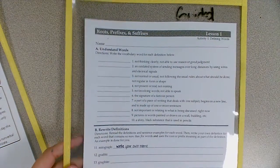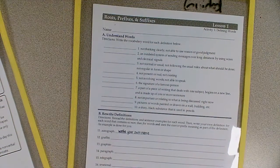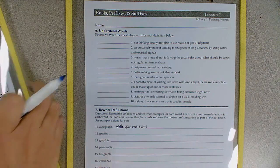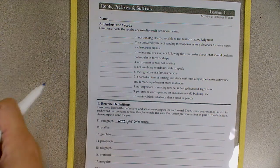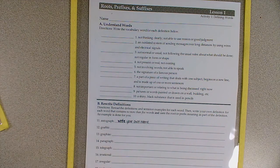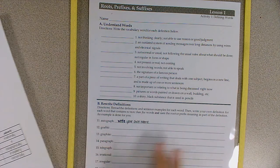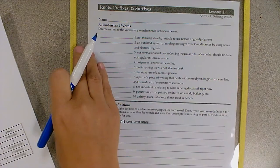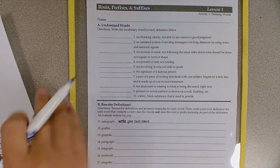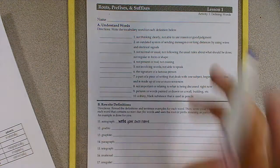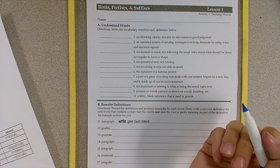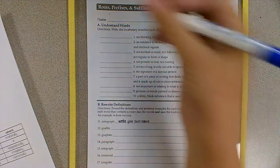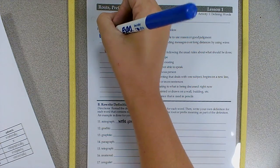So let's take a look at our guided practice for today. We're going to start with part A, understand words. As we go through these, make sure that you write them down. We may skip some parts. Anything that we skip, I'll just write skip next to it. You're welcome to give it a try on your own, but you do not have to. Number one, not thinking clearly, not able to use reason or good judgment. That would be irrational.